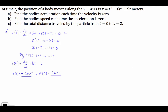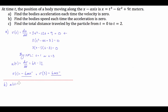For part B, we're asked to find the body's speed each time the acceleration is equal to 0. We just calculated that acceleration in terms of time is a(t) = 6t - 12. Setting this equal to 0, we take 12 over and divide by 6, giving us t = 2.